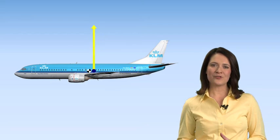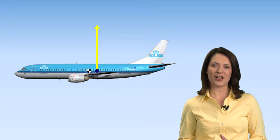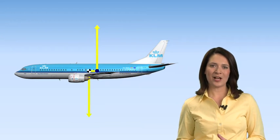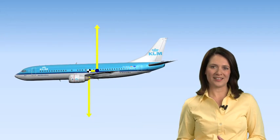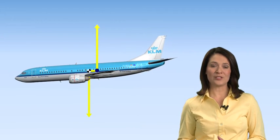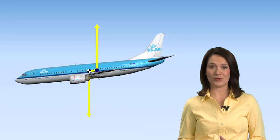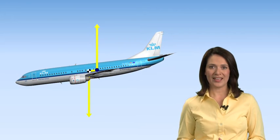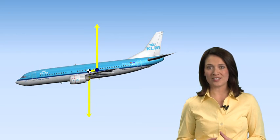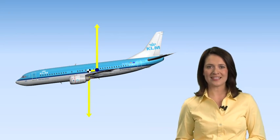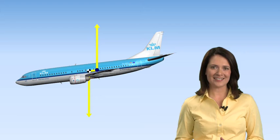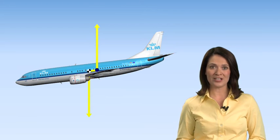But if the centre of pressure moves aft of the CG, then a couple is formed and the aircraft will tend to pitch nose down. For stability reasons, which we'll discuss later in this lesson, this is, in practice, the usual arrangement.